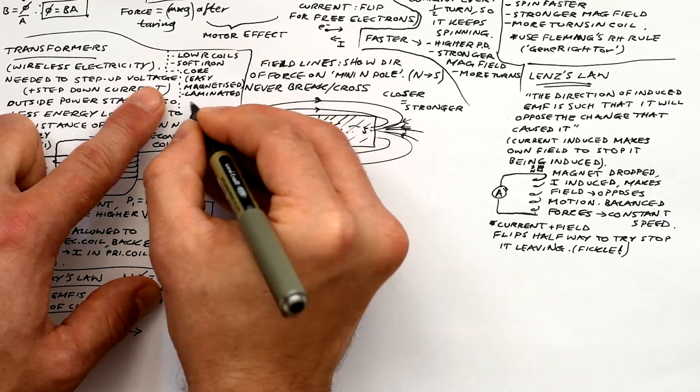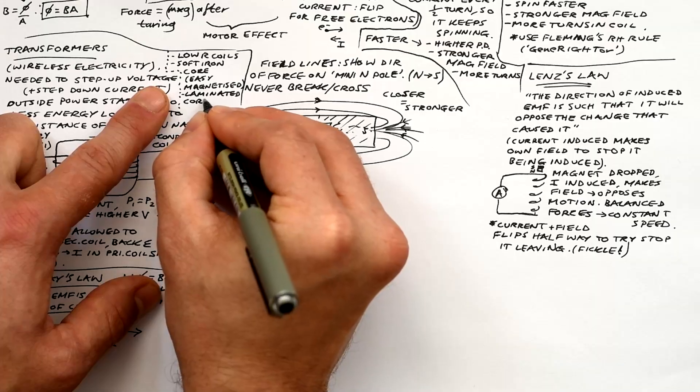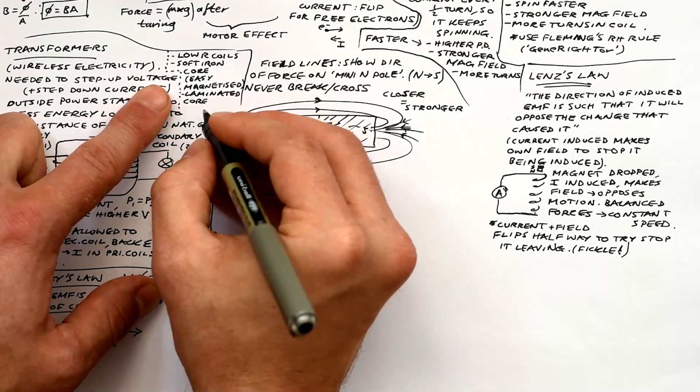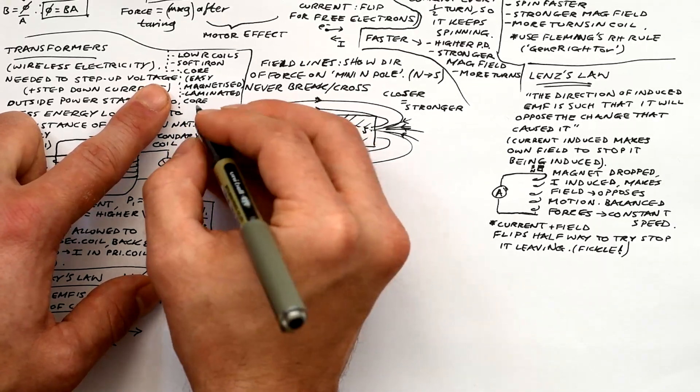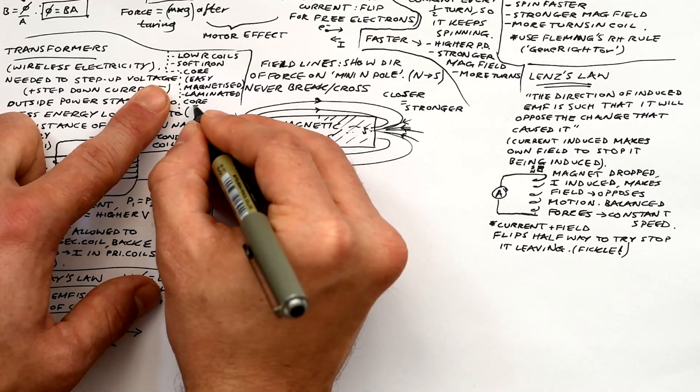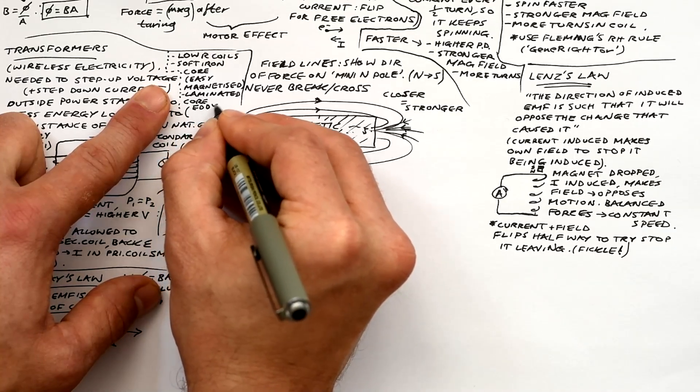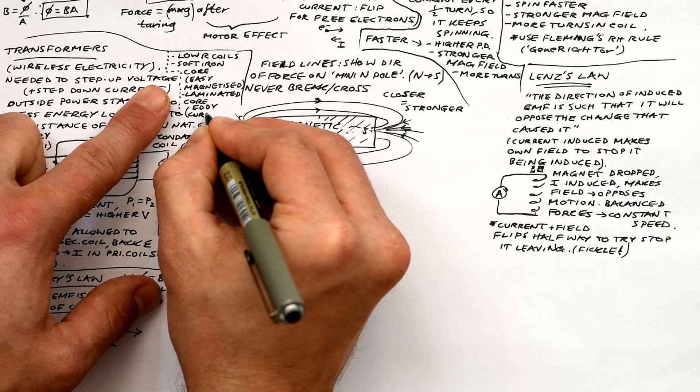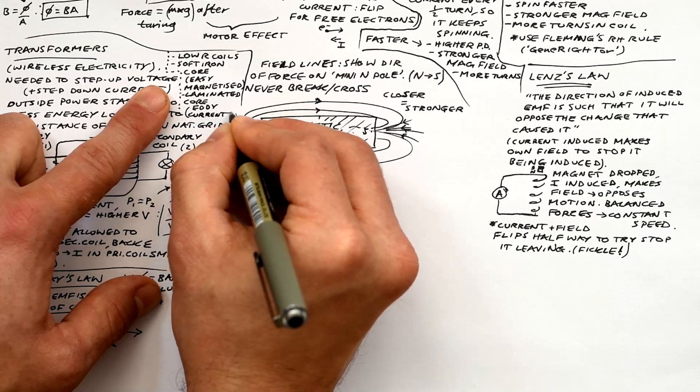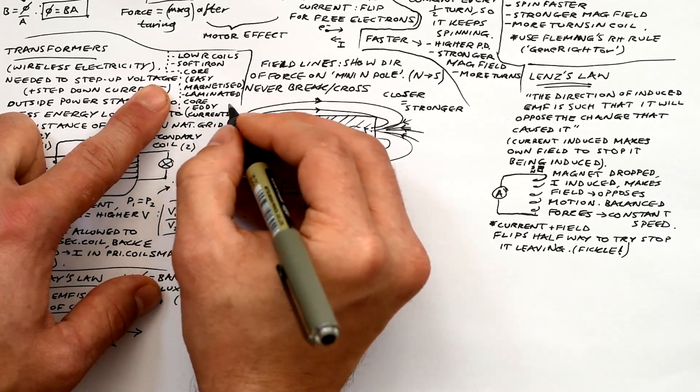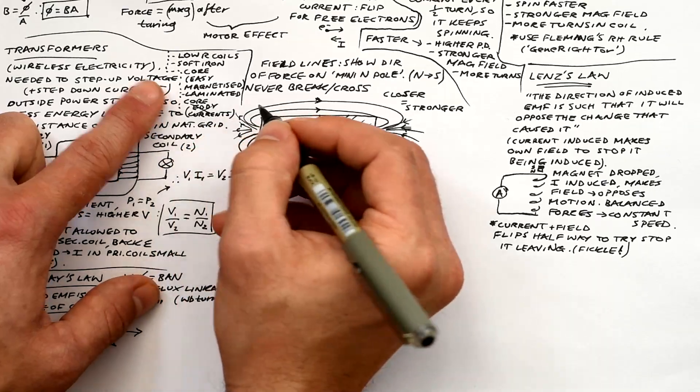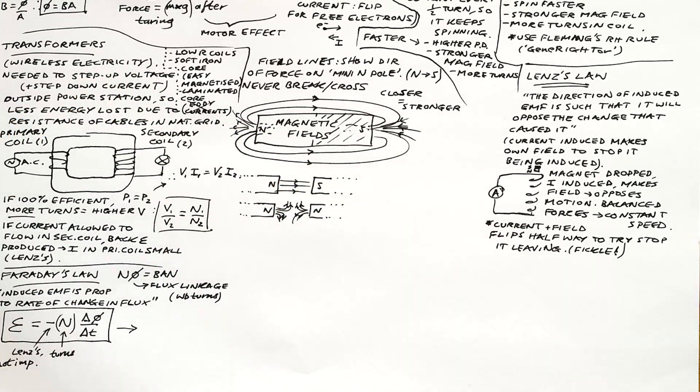And finally, we have a laminated or layered core. We split the core into layers. And this is to reduce the effect of eddy currents. Now we said we don't want any electricity in the core, but inevitably, you're going to get a little bit of current induced in the core itself. And then it just goes round and round. And because of the resistance of the core, you end up with energy being lost as heat. So laminating the core reduces these eddy currents.